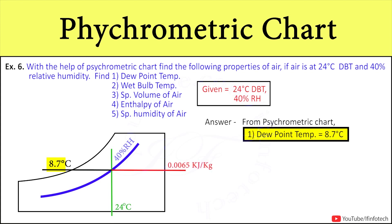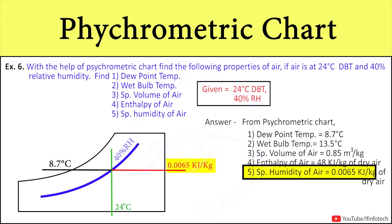And when we extend this to the right side, then specific humidity we got as 0.0065 kg per kg of dry air. And when we saw the specific volume line, then we got somewhat near to 0.85 cubic meters per kg of specific volume.